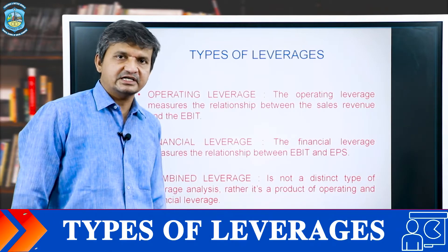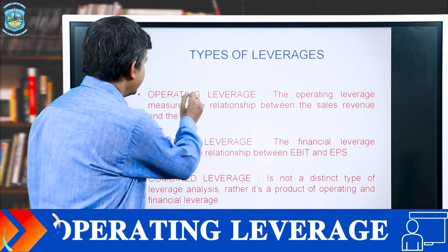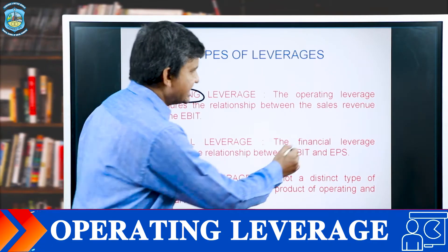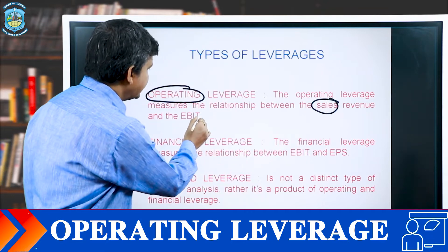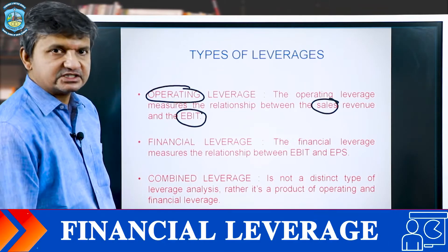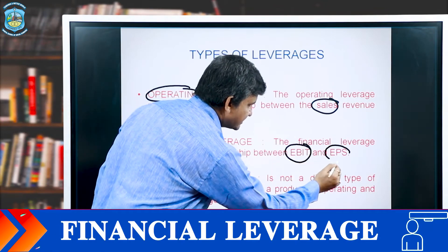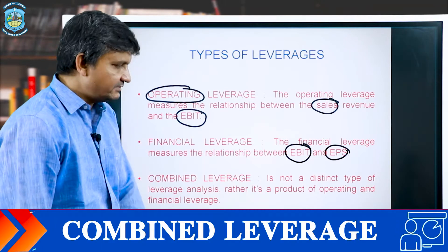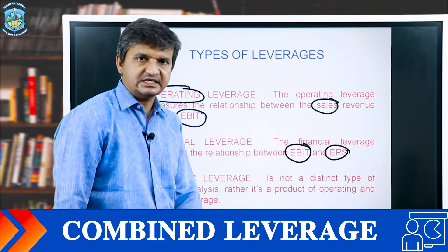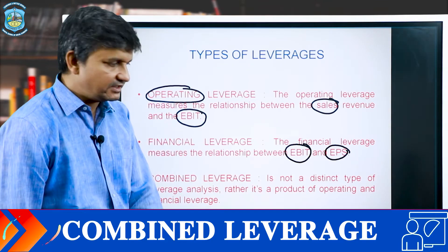Now let's see how many types of leverages there are. The first one is operating leverage, which studies the relationship between sales and EBIT. The next one is financial leverage, which studies the relationship between EBIT and EPS. The third one is combined leverage — it is not a distinct type but basically the product of operating leverage and financial leverage.